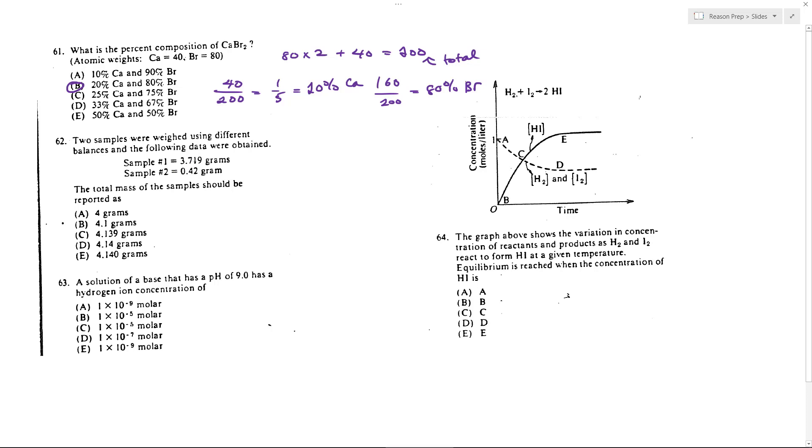So the trick when we add numbers together and want to preserve the right number of significant figures, what we do is let's first add these up. So 3.719 plus 42. So we'll add this up. So we get 931, and then carry the 1. We get 4.139.